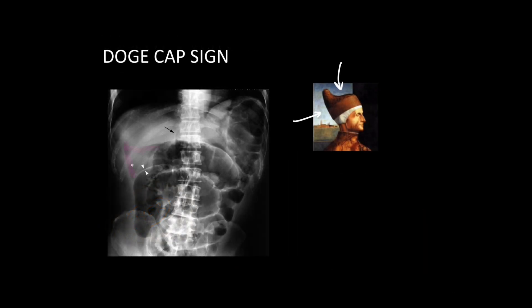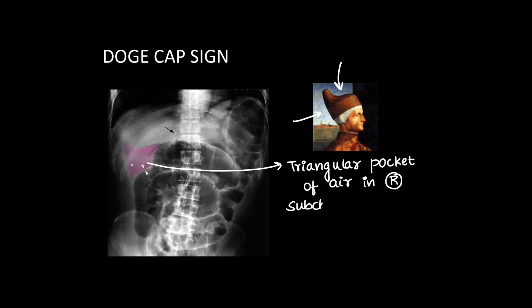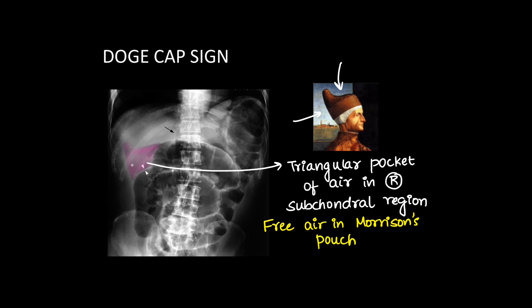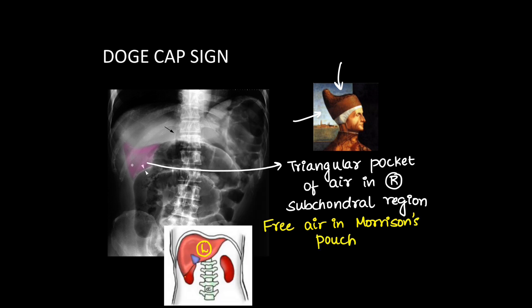Next we have the doge cap sign. Here we can see a triangular pocket of air collecting in Morrison's pouch — that is the doge cap image — in the right subhepatic region. This is when free air is collected in Morrison's pouch, which is the dependent space between the liver and the right kidney.